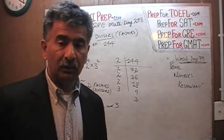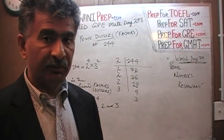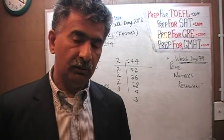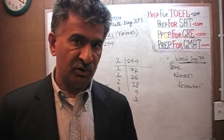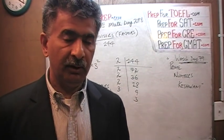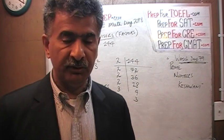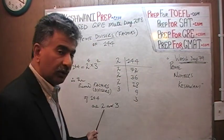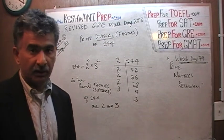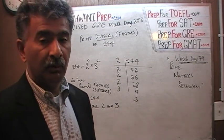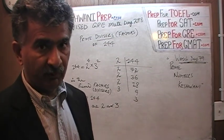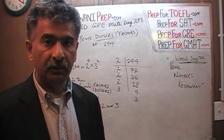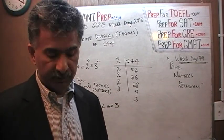Just like the only two prime numbers you can divide 100 by are 2 and 5, similarly the only two prime numbers you can divide 144 by are 2 and 3. There are no other prime factors of 144. 144 has several factors, but none of the others are prime numbers — there are only two prime numbers: 2 and 3.